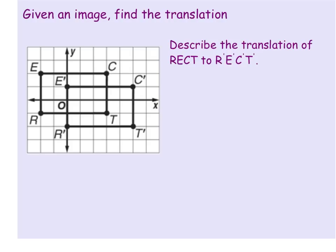In this example we are working backwards. We're given an image and we want to find the translation. Describe the translation of RECT to R'E'C'T'. All you're going to do is figure out how you're getting this point R from where it's at to its new location. If you count, you can see it's going to the right two and down one.